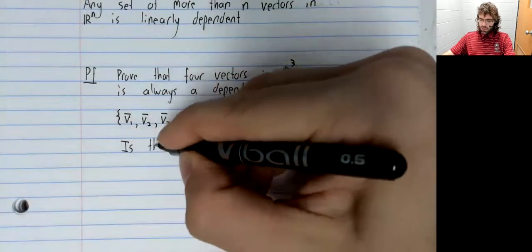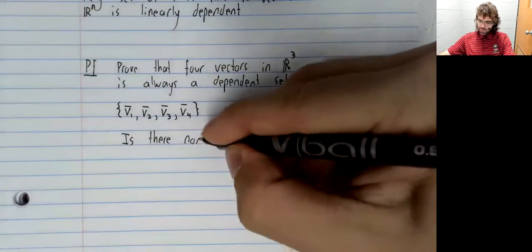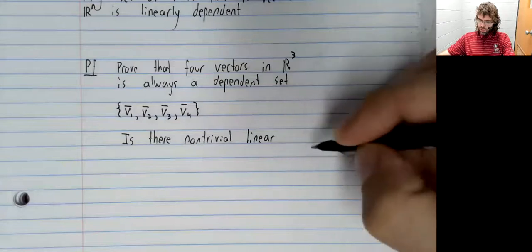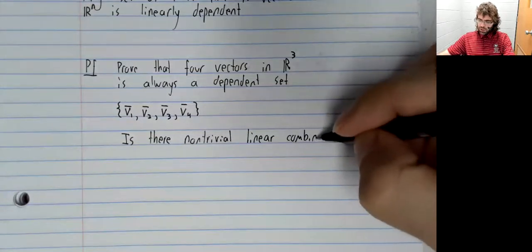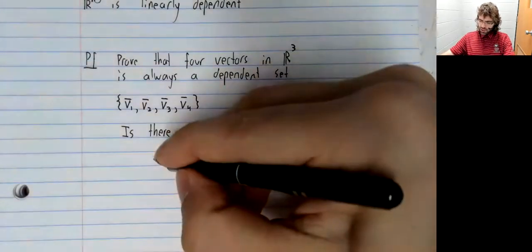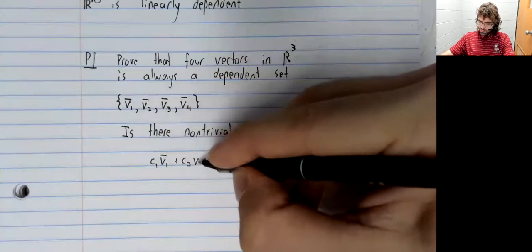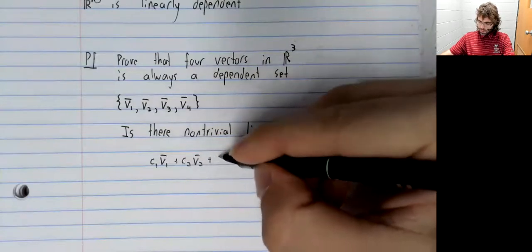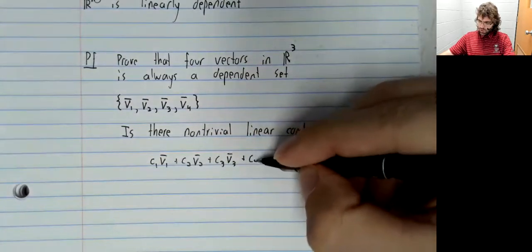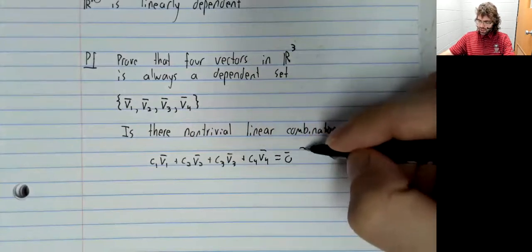So we'll return to the definition of dependence. Is there a non-trivial linear combination of these vectors that equals the zero vector?